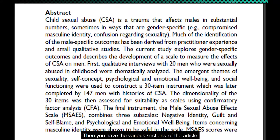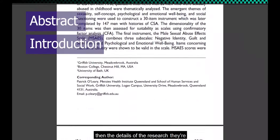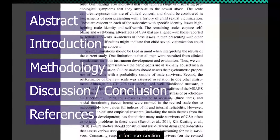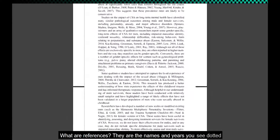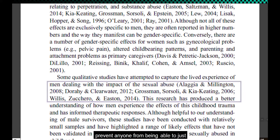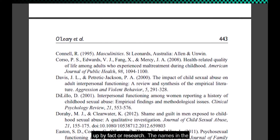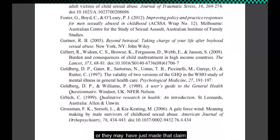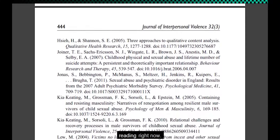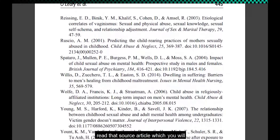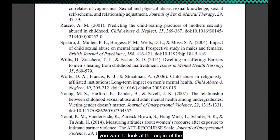Then you have the various sections of the article: usually an abstract, an introduction, then the details of the research they're presenting, and a discussion and/or conclusion. At the end you have the reference section. References are the names and years you see dotted around the article. The purpose of peer review is to prevent anyone from making spurious claims not backed up by fact or research. The names in the article refer back to the person who has made that claim before, and that person may either have presented proof or backup for that claim, or they may have just made that claim previously. This provides a chain of accountability, and it allows you to follow up with that reference and read that source article, which you will find listed in the reference section, if you want to look at the origin of that claim in more detail.